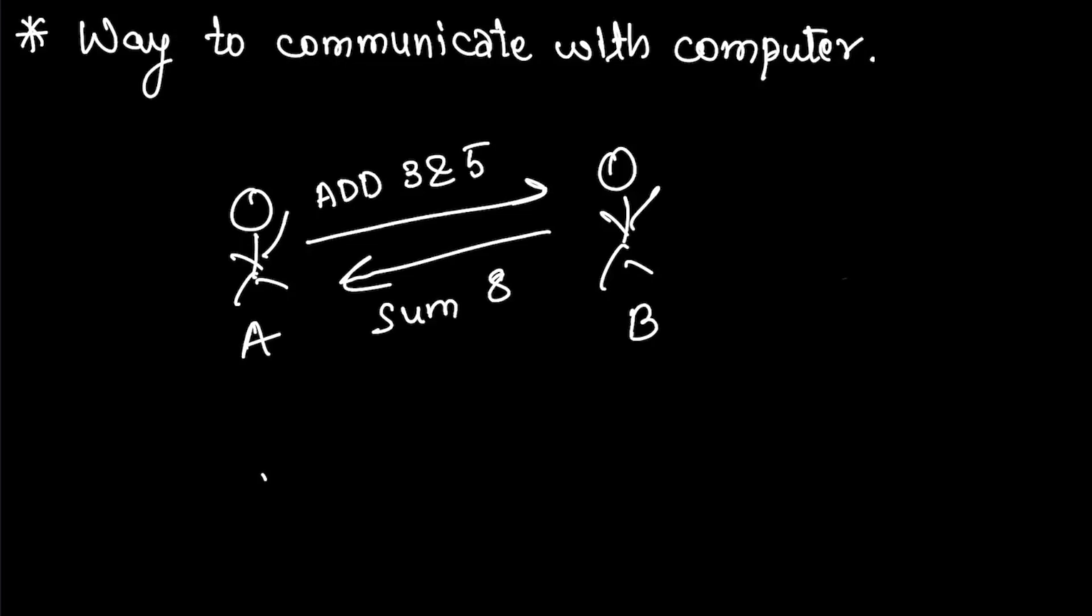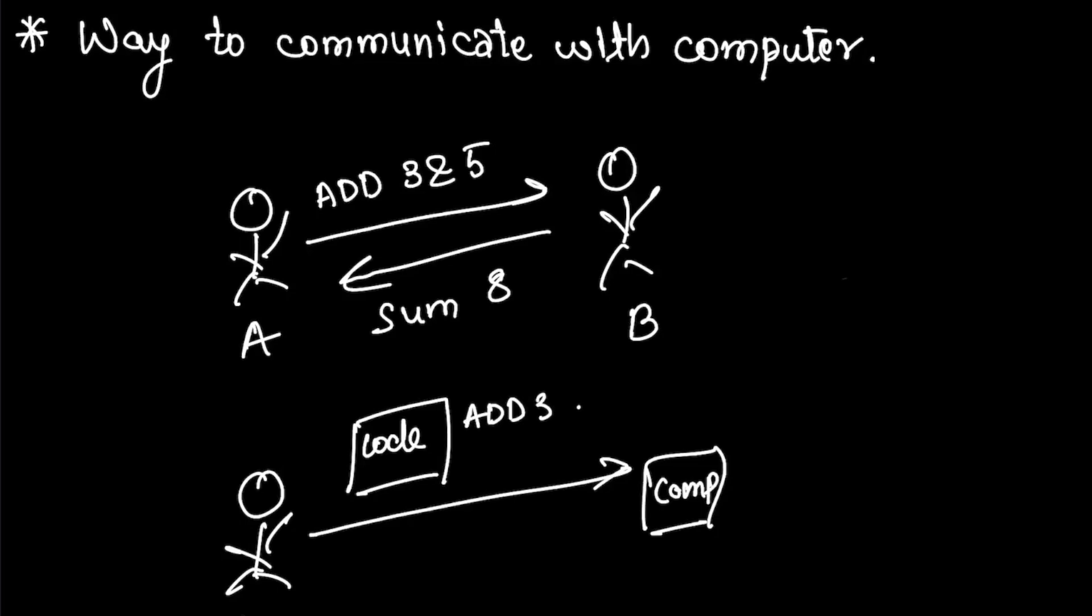Now imagine a scenario where person A is trying to interact with a computer. The computer doesn't understand English. So what is the way for person A to interact with the computer? They should write code in a particular programming language which basically implies add 3 and 5. The computer will understand what the code means and will respond to the person saying that the sum is 8.